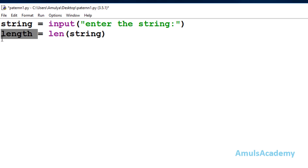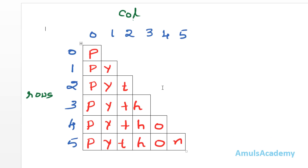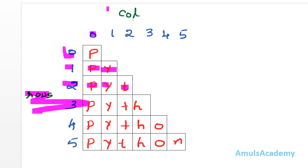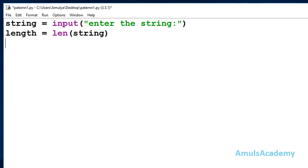Our output contains that many rows. To print characters in different rows and columns, we use nested for loops — a for loop within a for loop. First we write the for loop for rows, and within that, the for loop for columns. At row 0 we check column 0; at row 1 we check column 0 and column 1; at row 2 we check columns 0, 1, and 2, and so on.